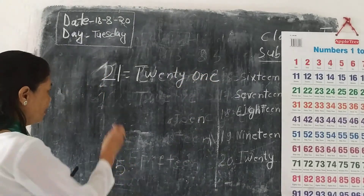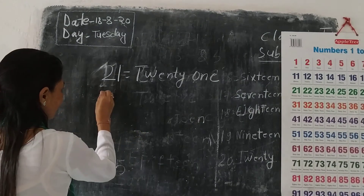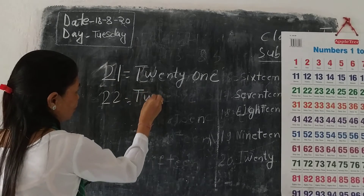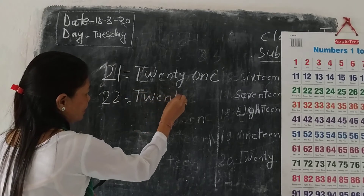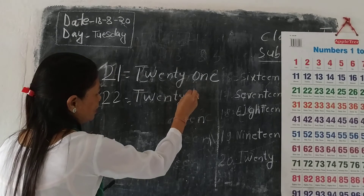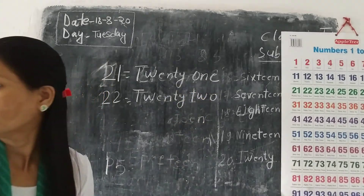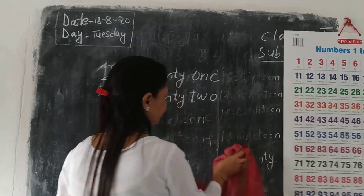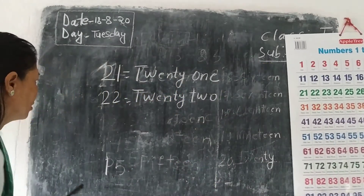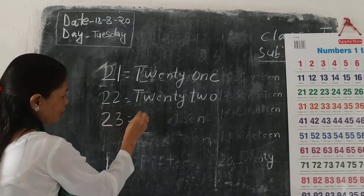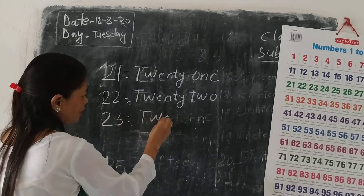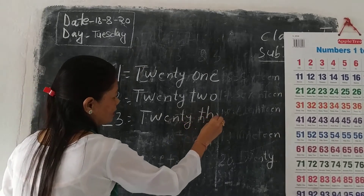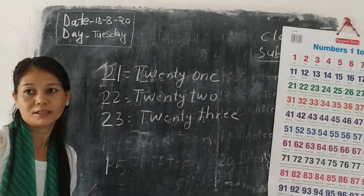And 23 — T-W-E-N-T-Y T-H-R-E-E. 23. And 24 — T-W-E-N-T-Y F-O-U-R. 24.